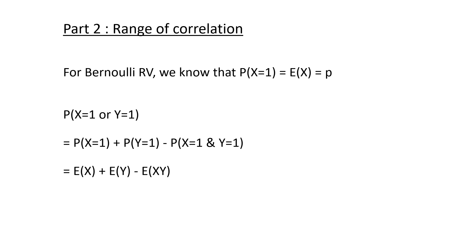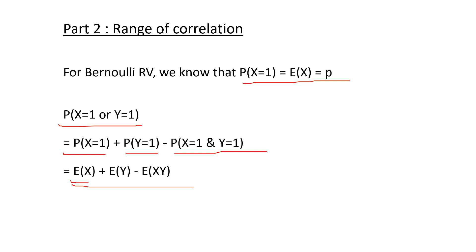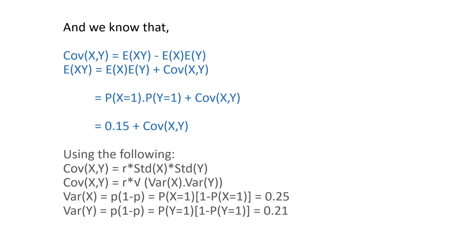For the second part, we need to find the range of the correlation between the defaults. For a Bernoulli random variable, E[X] = P(X=1). We can rewrite our equation as E[X] + E[Y] - E[XY]. We also know that Cov(X,Y) = E[XY] - E[X]·E[Y], so rearranging gives E[XY] = E[X]·E[Y] + Cov(X,Y).